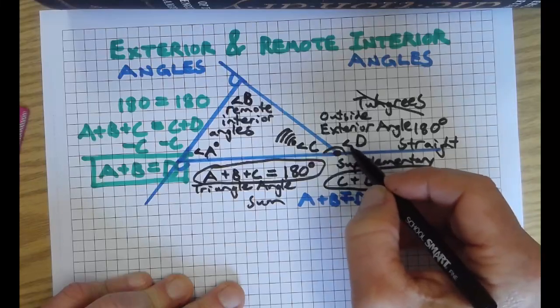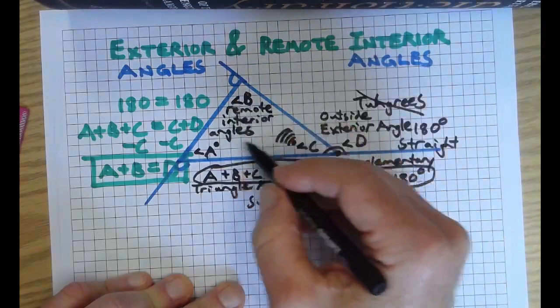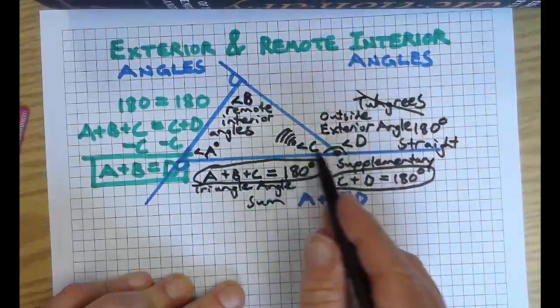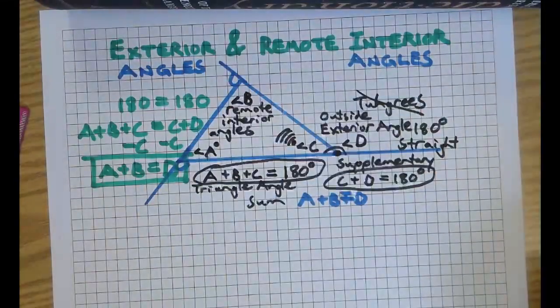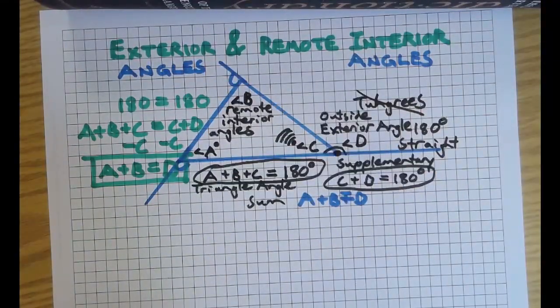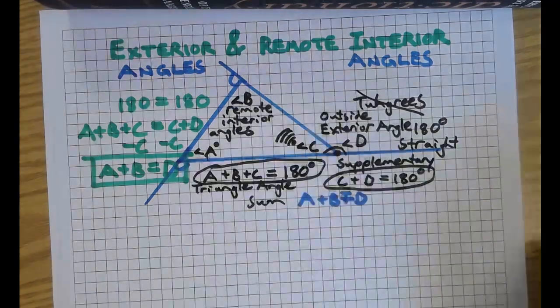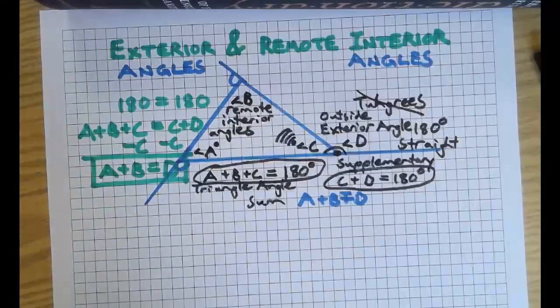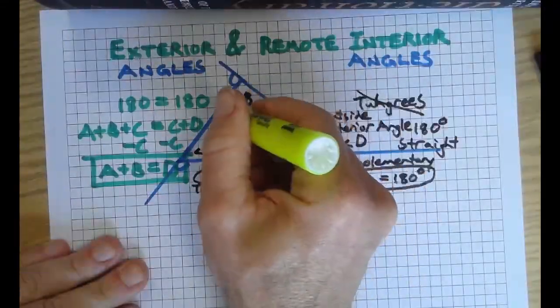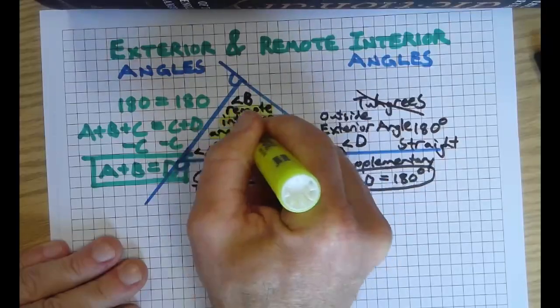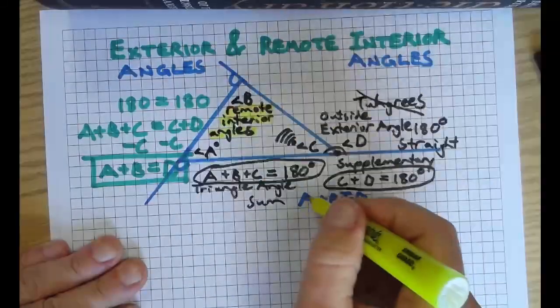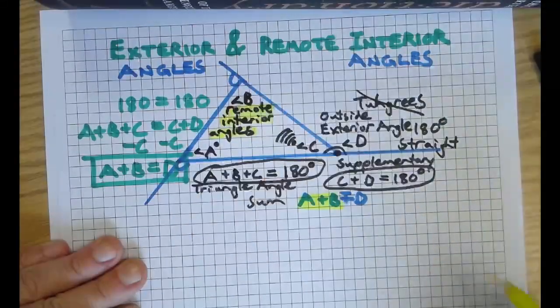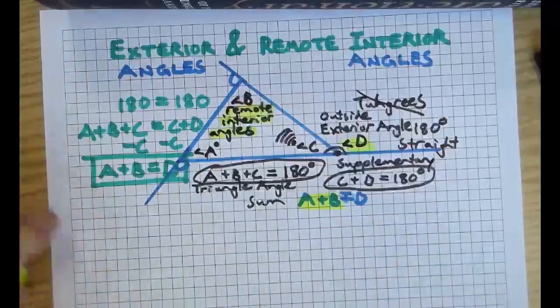This corner, angle D, has to send a little signal out to get through here and connect with A and B, and they're equal. Let's prove it with some numbers. Okay, so the important vocab we just covered here: we have remote interior angles, and those are equal to the exterior angle.